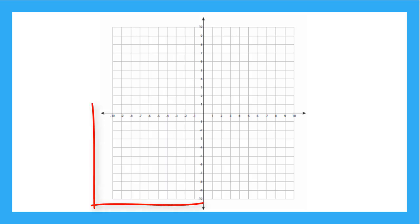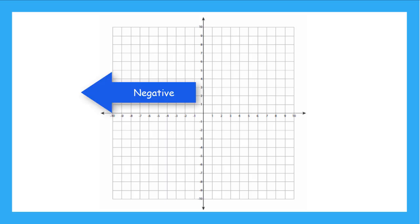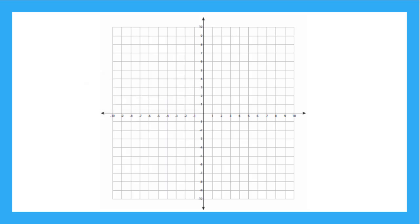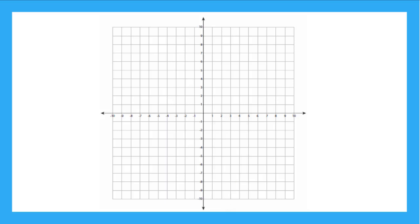Now, if we move down here to quadrant 3, we see the x-axis is still the horizontal line, and all the x-coordinates are also negative numbers. The y-axis is the vertical line, but it points down. So all the y-coordinates in quadrant 3 are also negative numbers. So we know the ordered pairs that live in quadrant 3 will be negative x and negative y.